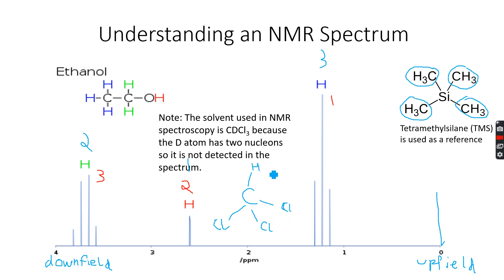And here we replace this H atom with a D atom which is basically deuterium. Deuterium is a hydrogen atom which has one proton and one neutron.